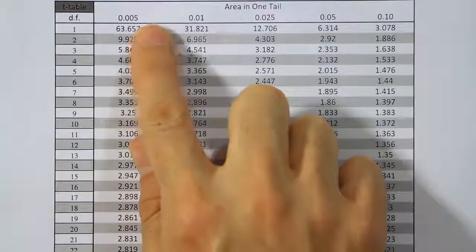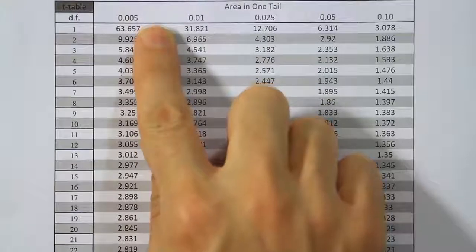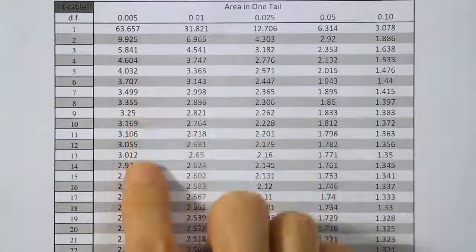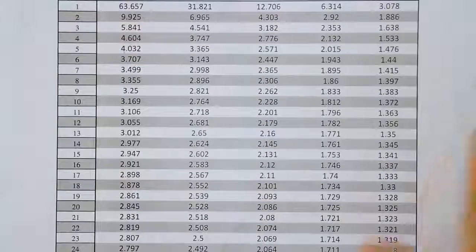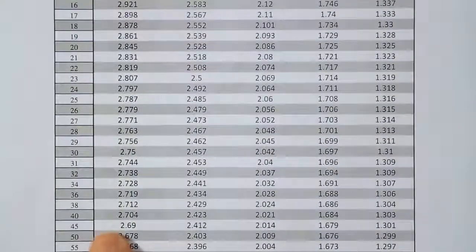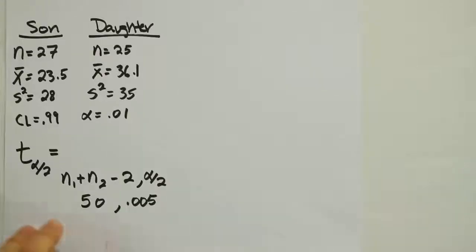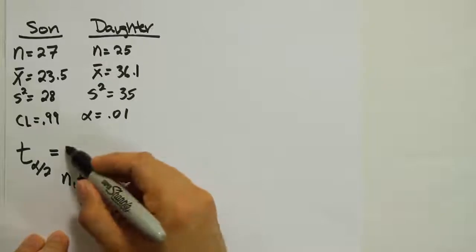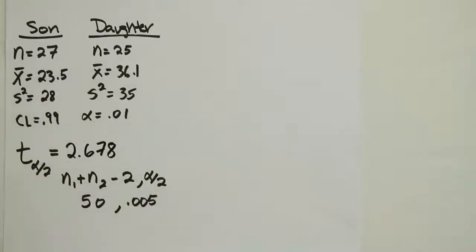Looking at the T table for 0.005 in one tail with 50 degrees of freedom, we find our T critical value is 2.678.